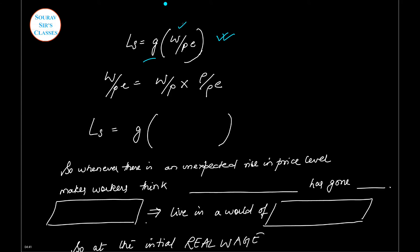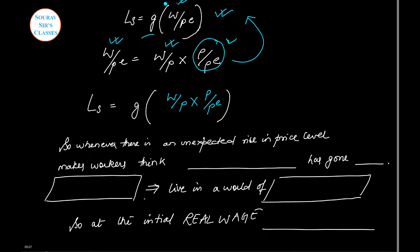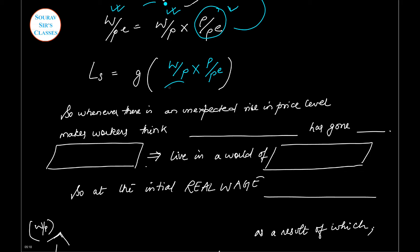Now having said that, let us substitute a little bit. So we had labor supply equal to a function of expected real wage, where our expected real wage is real wage times the ratio that measures worker misperception of the price level. So if I substitute this, what we see is that labor supply becomes a function of the real wage as well as the ratio that measures the worker misperception of the price level.